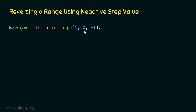We will not get 0 because 1 minus 1 is 0, and 0 must not be included in the result since it is the stop value. So we get the range from 5 to 1, meaning 5, 4, 3, 2, and 1 from this range function. Variable i will receive those values one by one, and we can print those values on the screen.